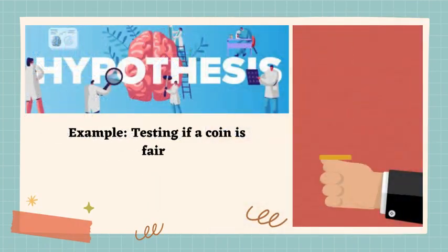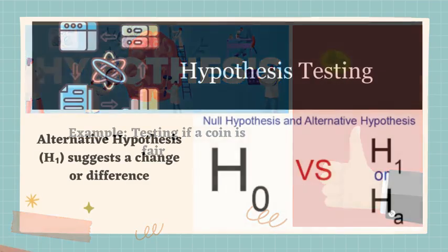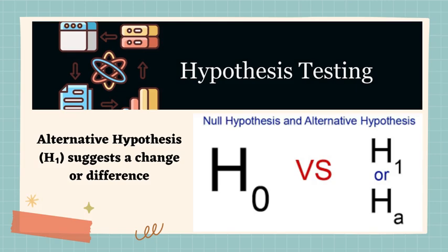For example, when testing if a coin is fair, our null hypothesis is that it lands heads and tails equally. We test the null hypothesis against the alternative hypothesis, which suggests there is a difference or effect and is denoted by H1.